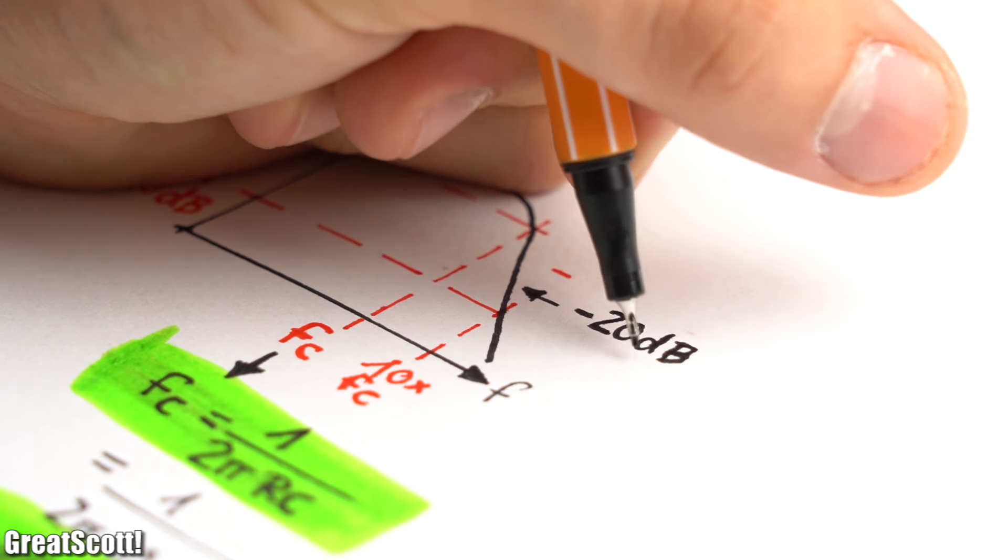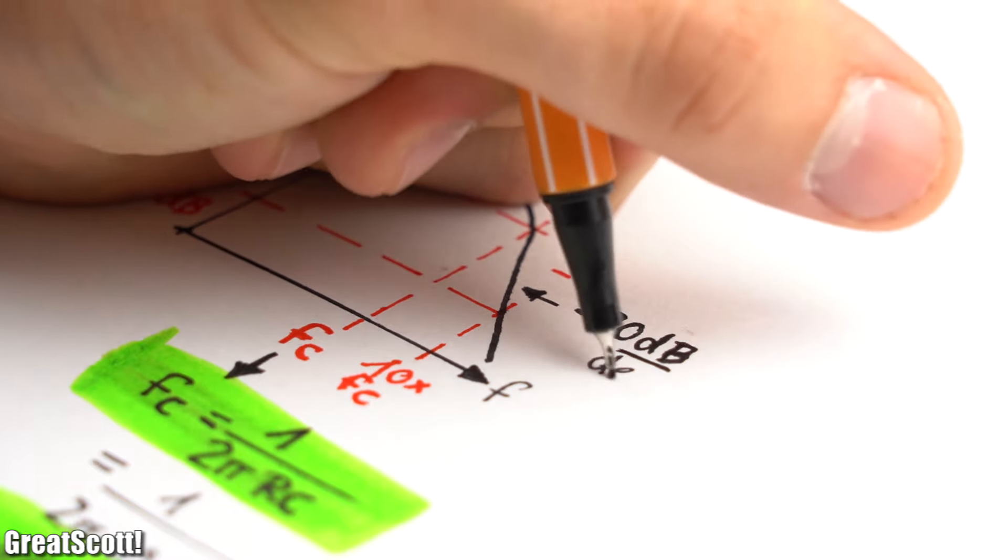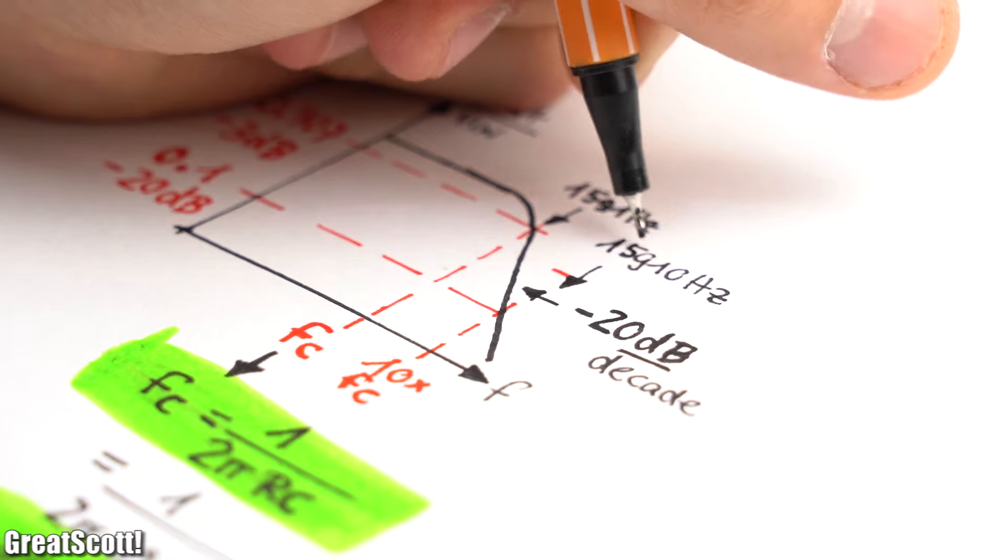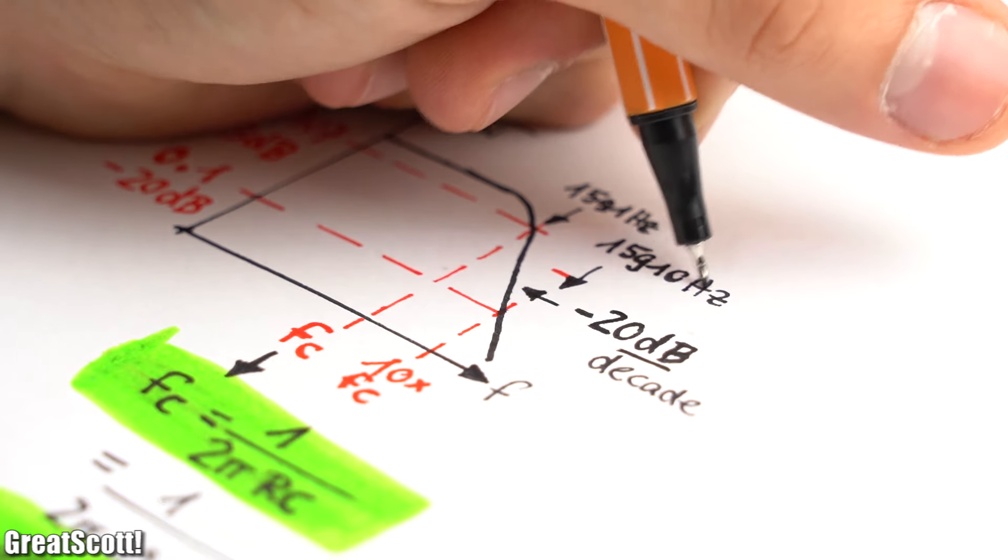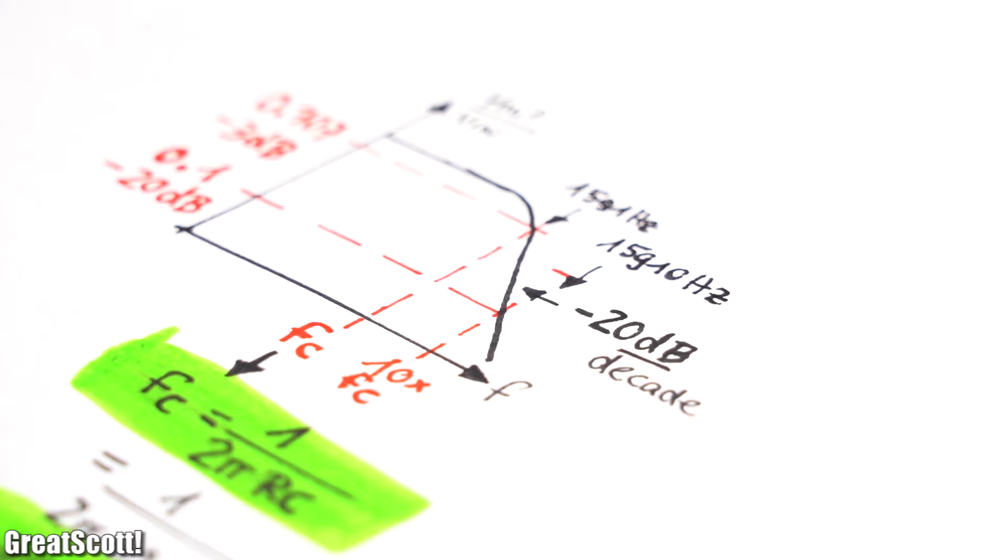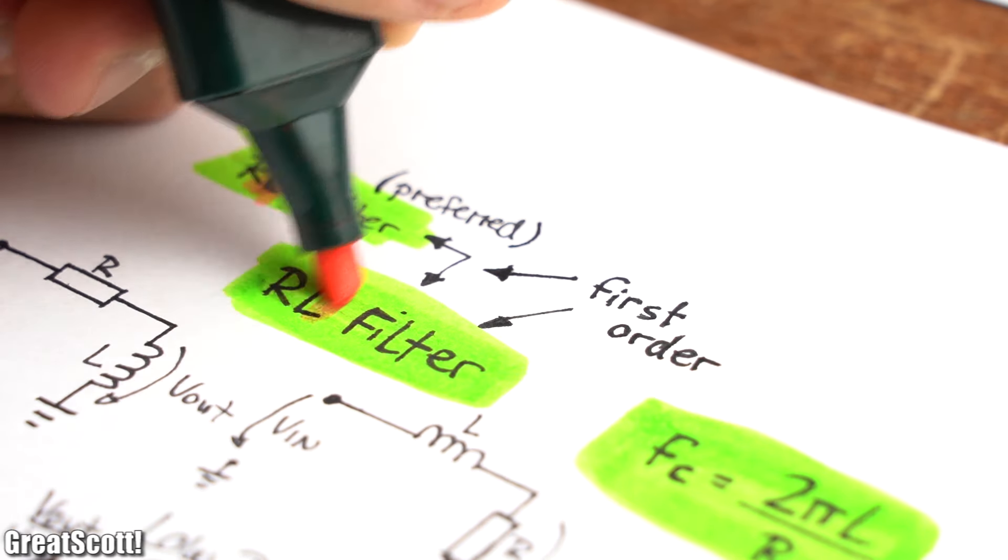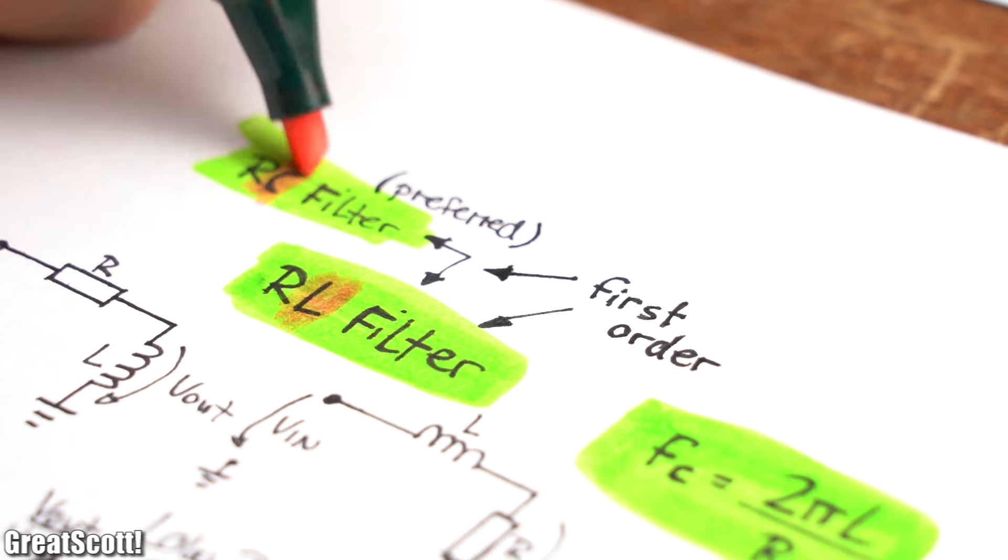The reason is that our RC and RL filters only offer a damping of minus 20 dB, which means unwanted frequencies will take a while to be completely filtered out. Such filters are called first order filters because they come with one frequency dependent component.